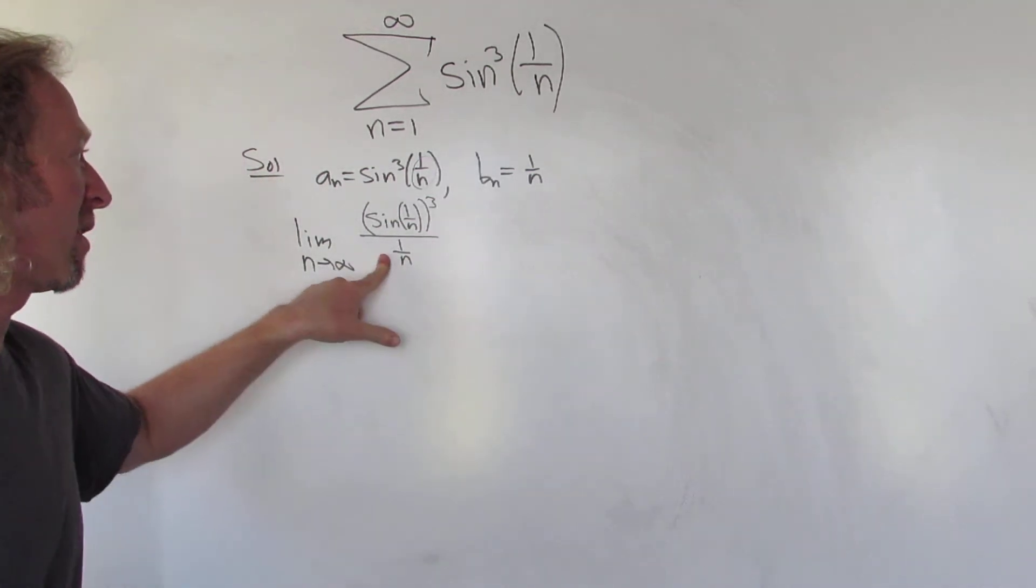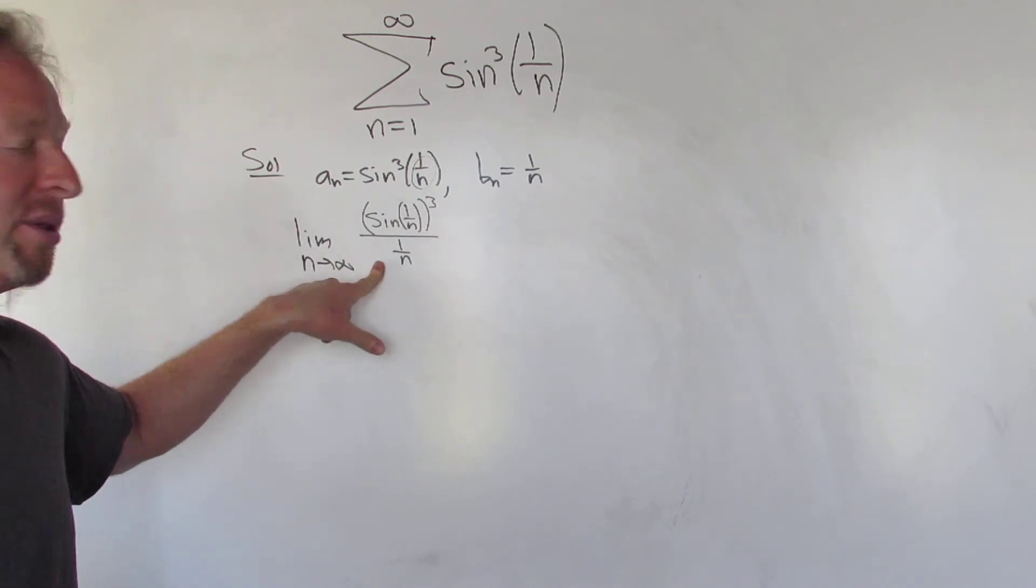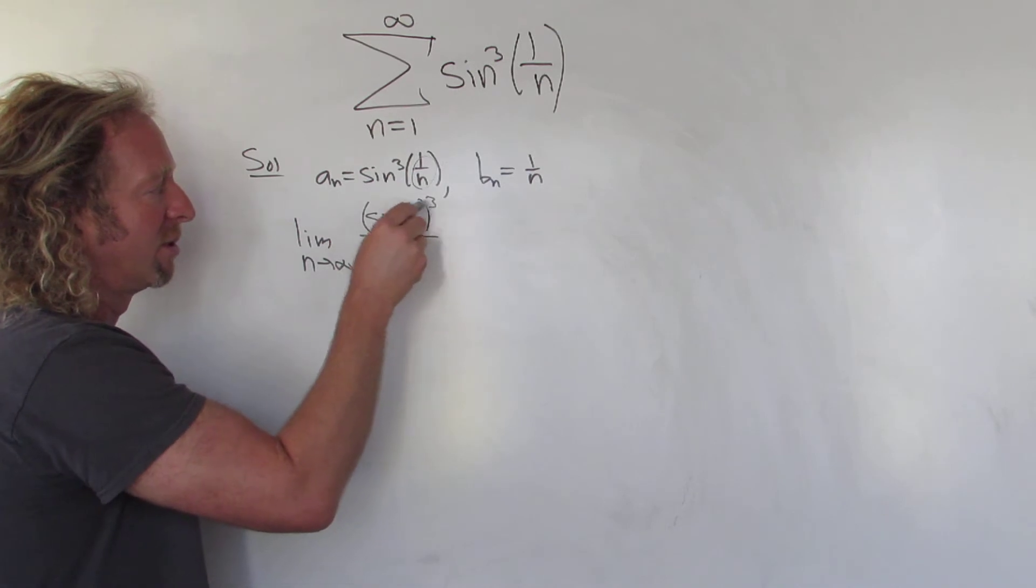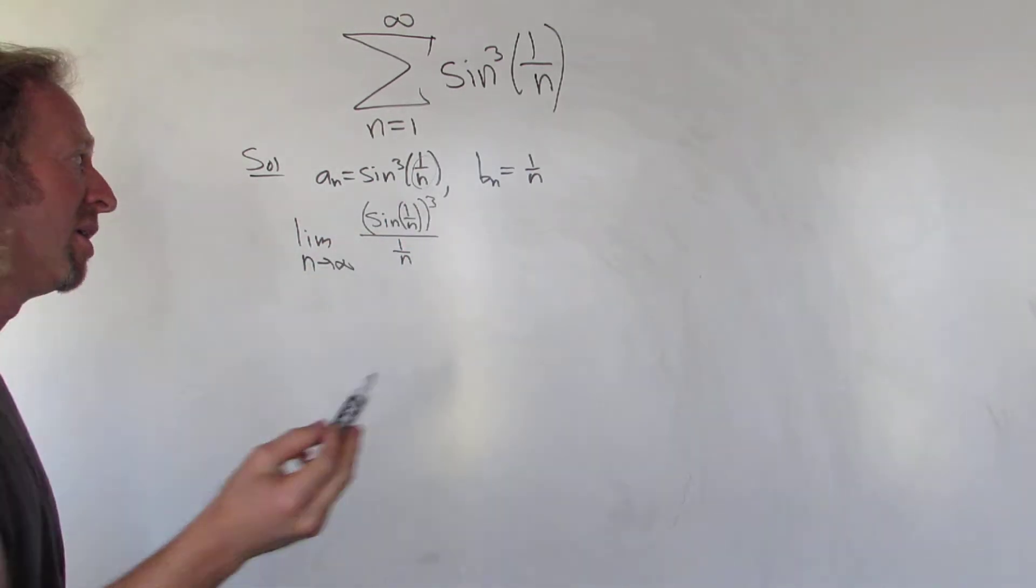Well, let's think. So on the bottom, it's going to be 0, right, because as n approaches infinity, 1 over n approaches 0. Up here, it'll be sine 0 cubed. So 0 cubed, it's also 0. So it's 0 over 0. So you can use L'Hopital's.